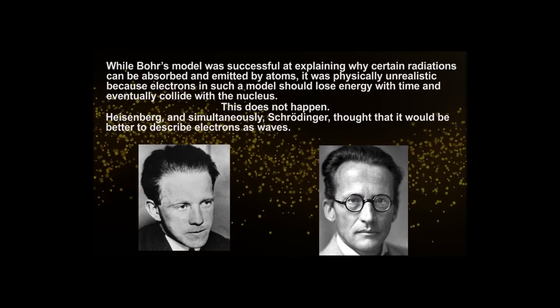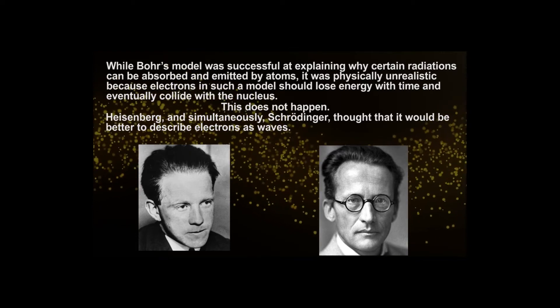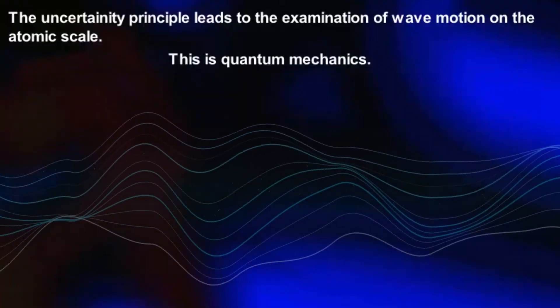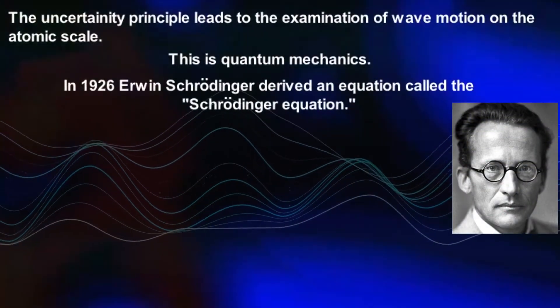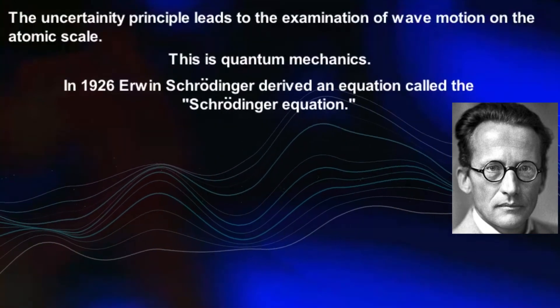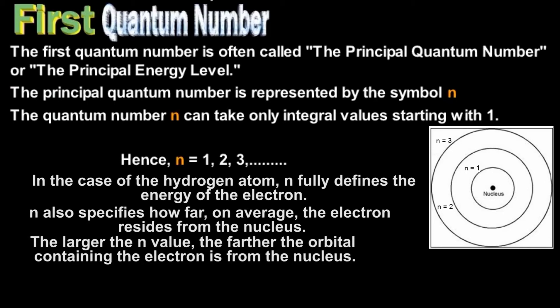Heisenberg's Principle and Schrödinger Equation are covered in Sections 7.4 and 7.5. This leads to understanding of the quantum mechanical model, covered in Sections 7.5 and 7.6. The AP Curriculum does not require the quantum mechanical model and the quantum numbers.